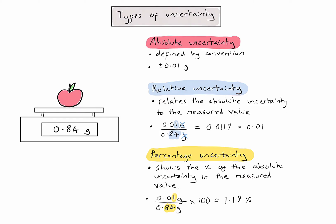So in this case, I need to give my final percentage uncertainty to just one significant figure. Here you can see that my percentage uncertainty would be plus or minus 1%.